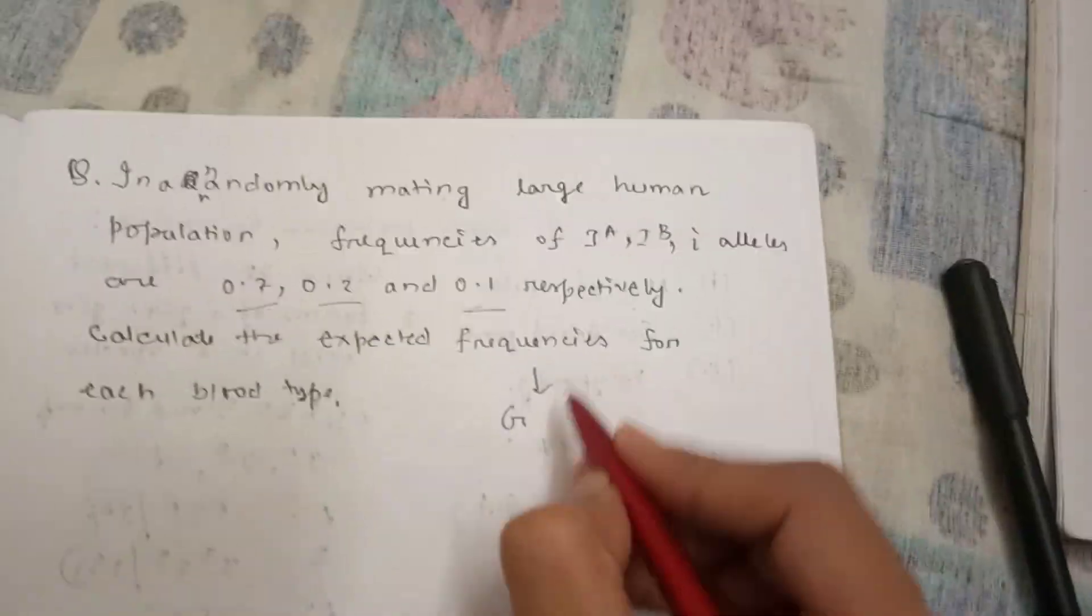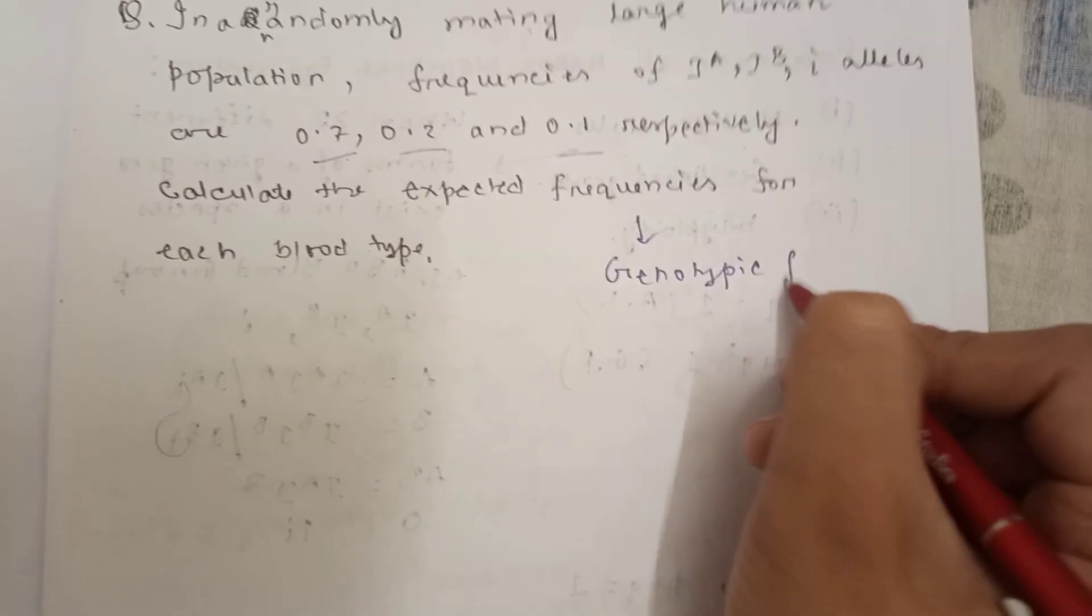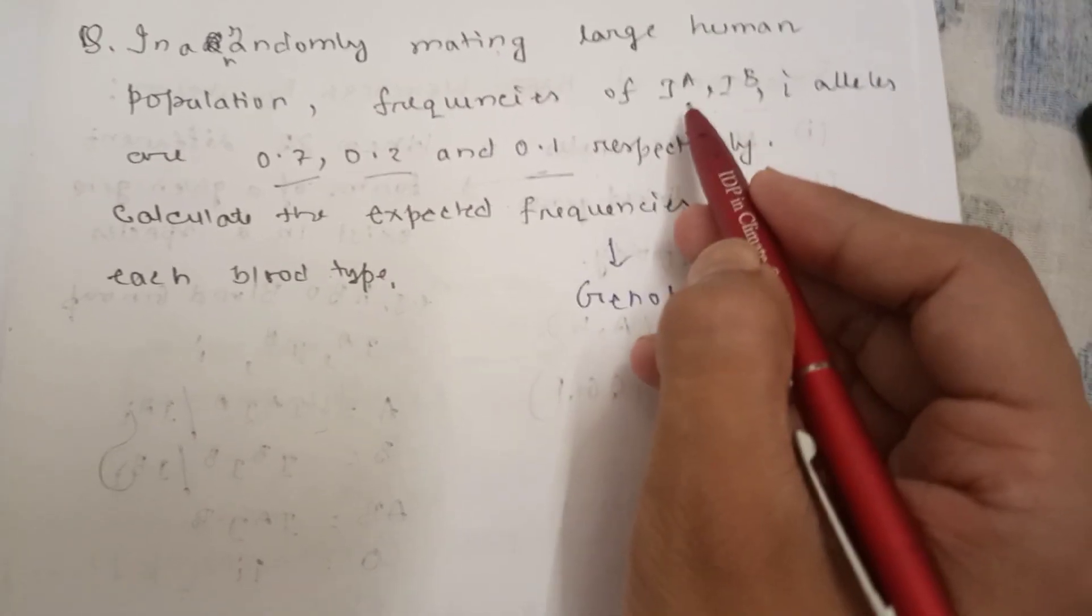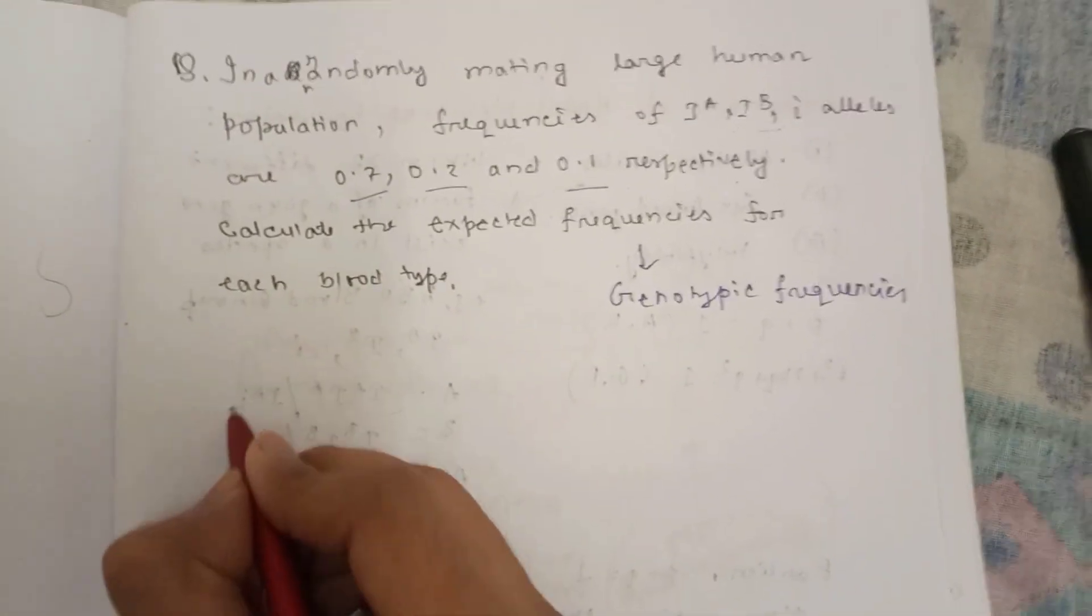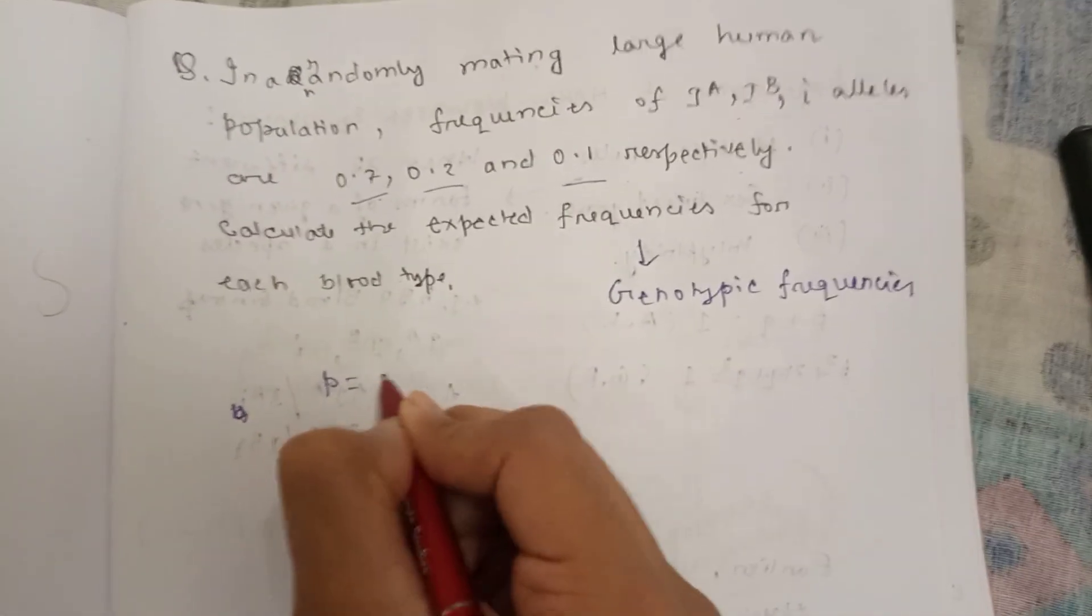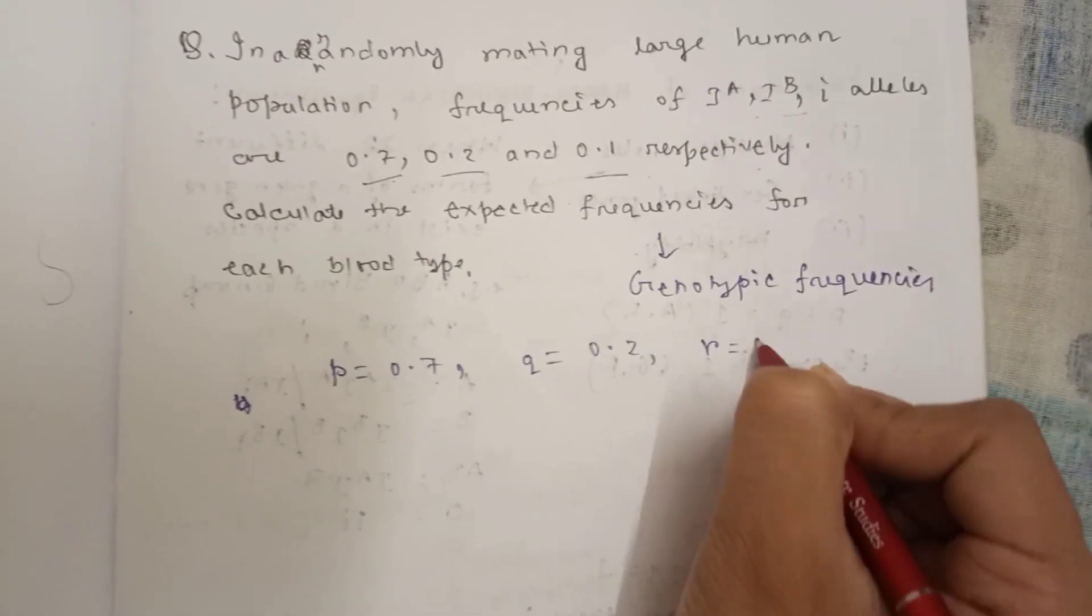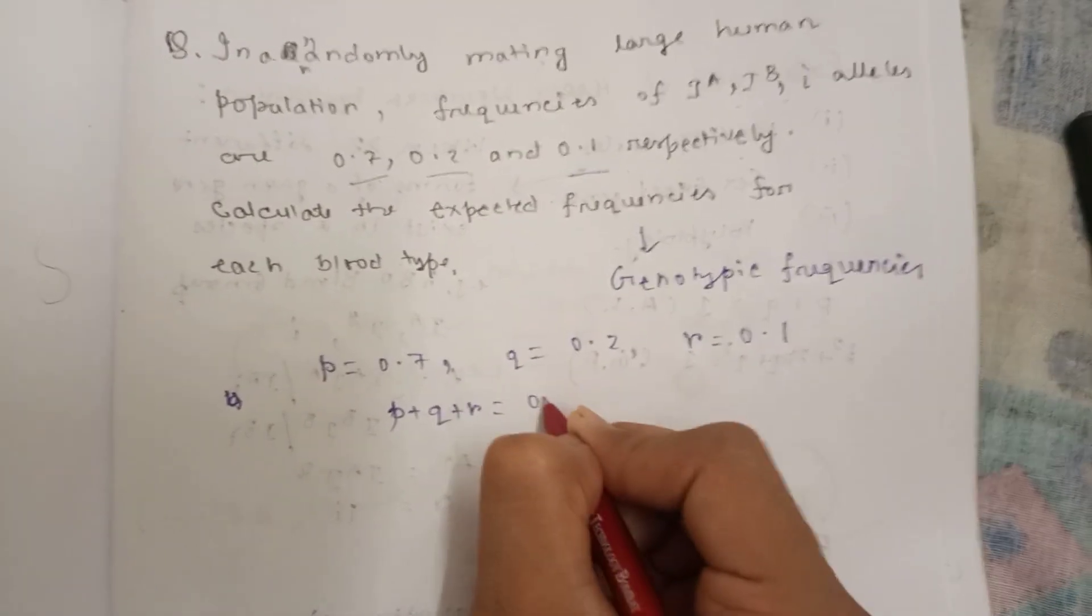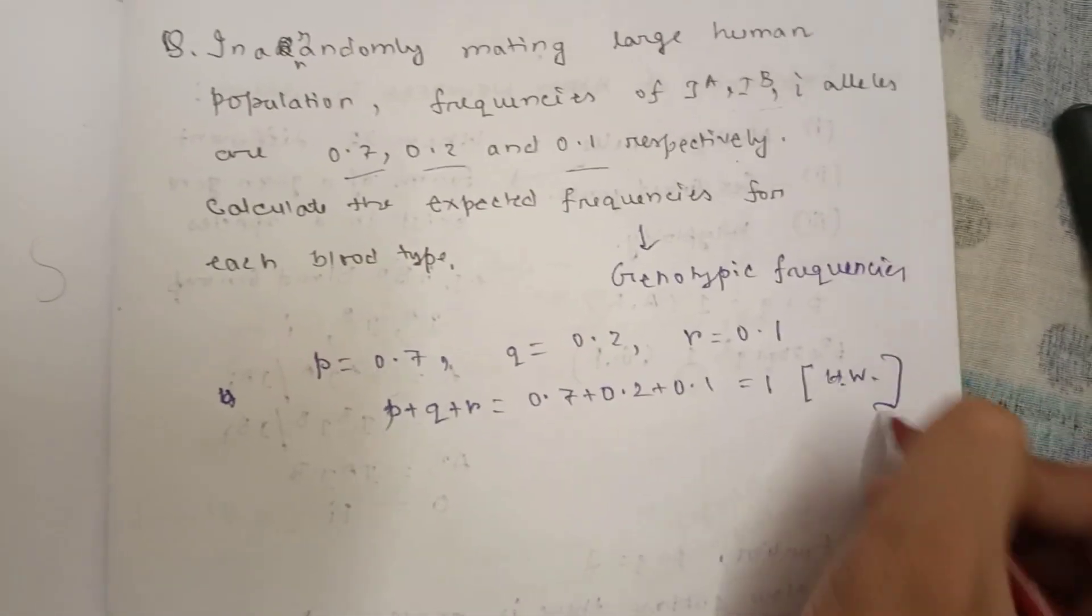Now calculate the expected frequencies for each blood type. Expected frequencies of each blood type means they are asking about the genotypic frequency. Let's assume p equal to 0.7, q equal to 0.2, r equal to 0.1. So p plus q plus r equal to 0.7 plus 0.2 plus 0.1 equal to 1, so it's in Hardy-Weinberg equilibrium.